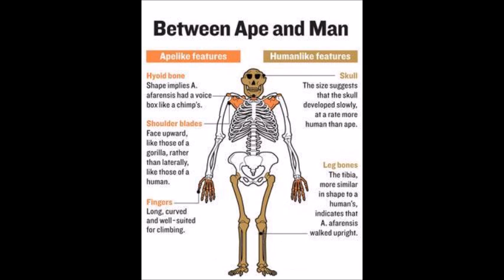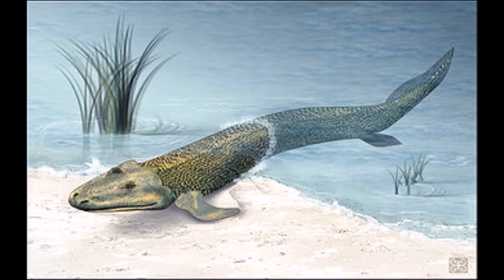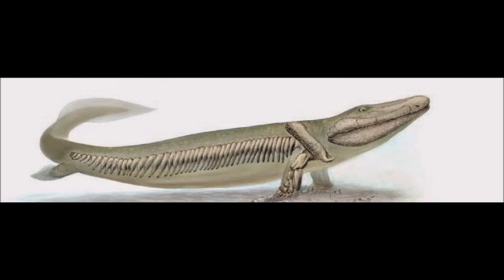Most people, though, think of a transitional organism as one that displays features of two different clades of organisms. For example, Tiktaalik is considered transitional because it displays features of fish and amphibians. It had fins, gills, and scales like a fish, as well as being considered a Sarcopterygian fish.